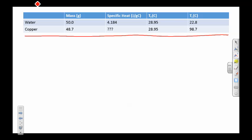Here we've got our water and here we've got our copper. I'm going to set this up with water being on the left hand side, so 50 grams of water with a specific heat of 4.184 joules per gram degrees Celsius times its temperature change, which is final minus initial for us, so 28.95 minus 22.8.